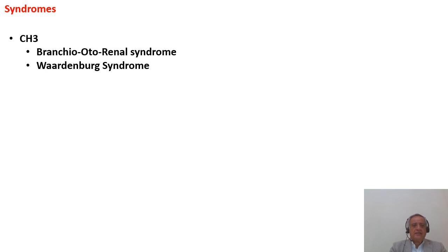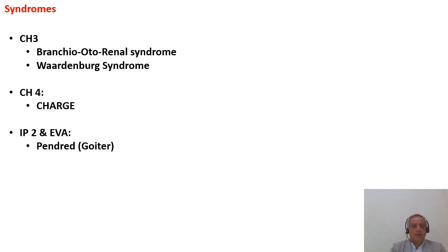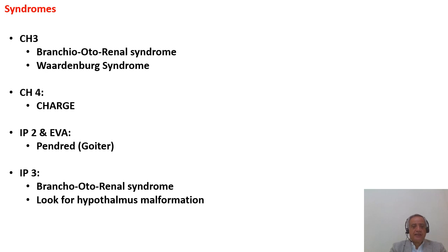Associated syndromes to consider: cochlear hypoplasia 3 may be associated with BOR (branchio-oto-renal) or Waardenburg syndrome; CH4 with CHARGE syndrome; IP2 and large vestibular aqueduct with Pendred syndrome or goiter; IP3 with branchio-oto-renal syndrome. Also look for hypothalamic malformations.